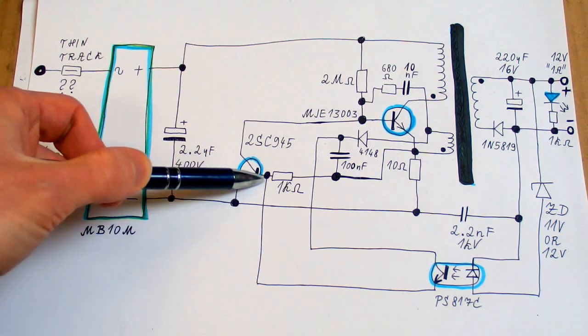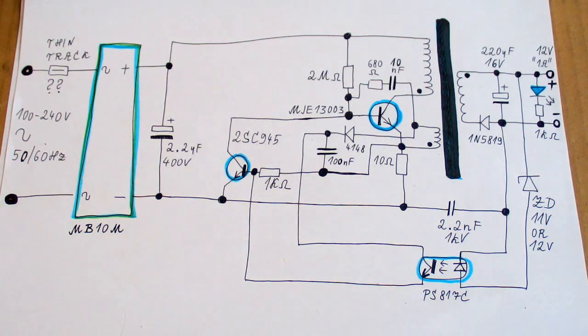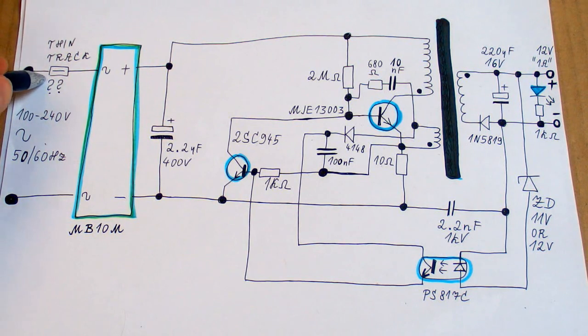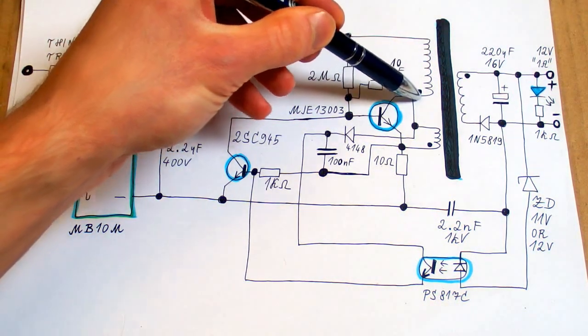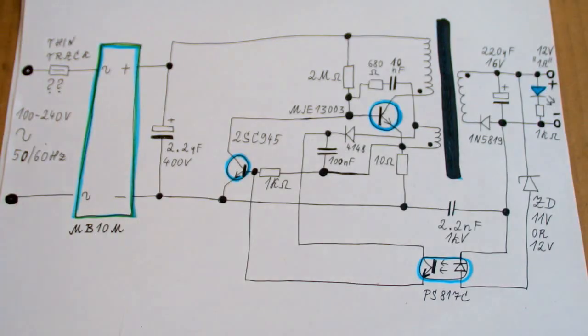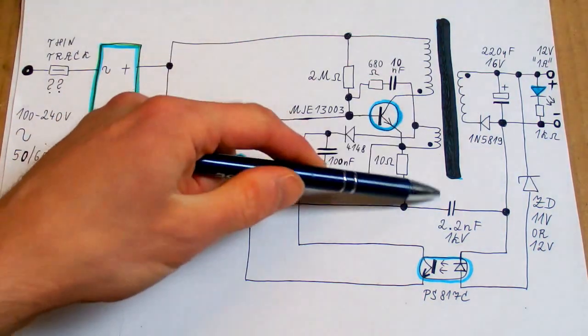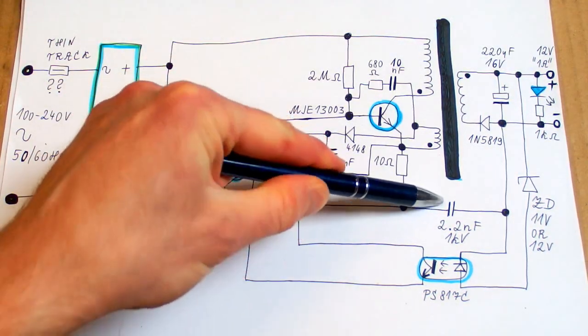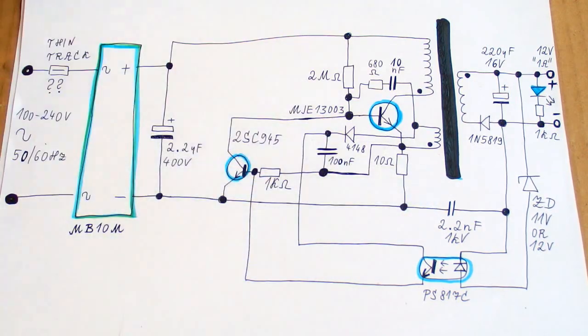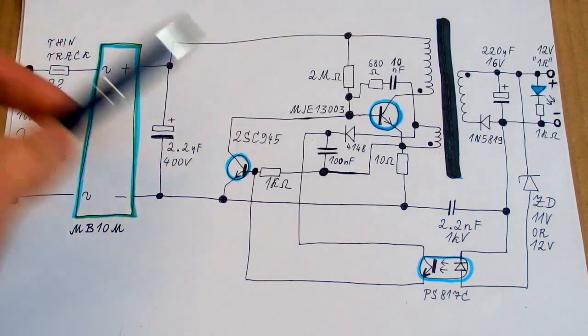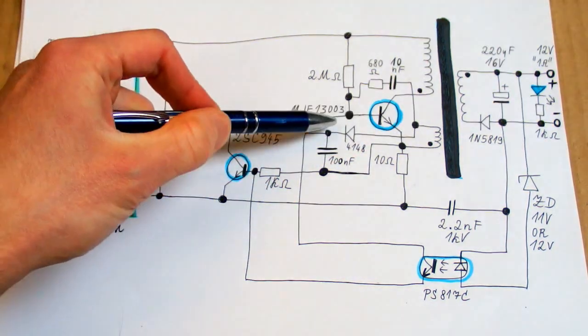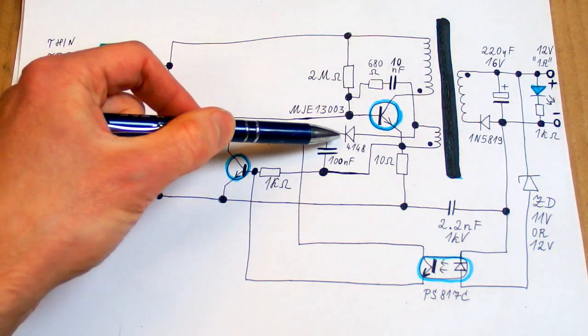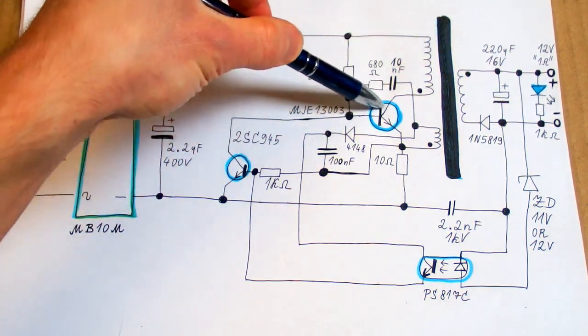But the circuitry is dodgy because there is no proper fuse, no inrush resistor or fusible resistor, no interference filter, there is also no snubber network on the primary. The only interference suppression is this capacitor which is not rated properly and it's also dented, which makes it even more dodgy. And there is one more oddity. The auxiliary power supply is actually rectifying in forward direction, not flyback. So the diode is conducting when the transistor is on, which is unusual.